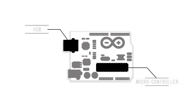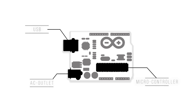To program it, we use the USB port on the Arduino to connect it to the computer and transfer the instructions via the Arduino software. This USB port can also be used to power it using a battery or an AC outlet.